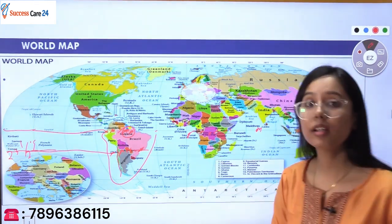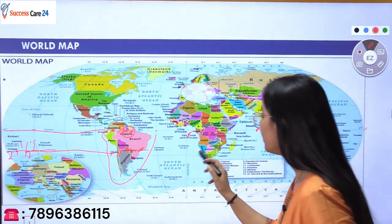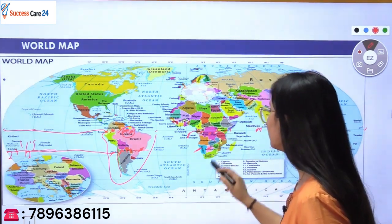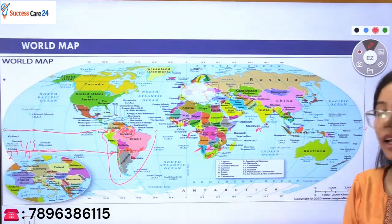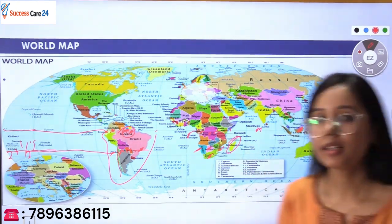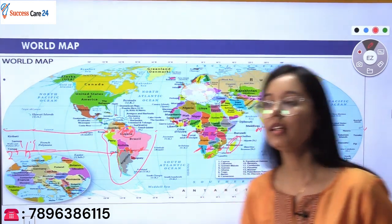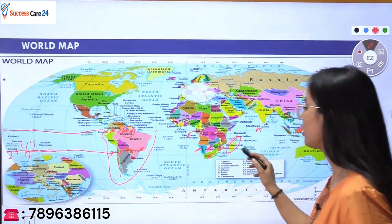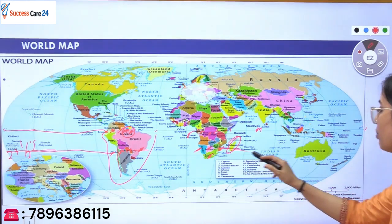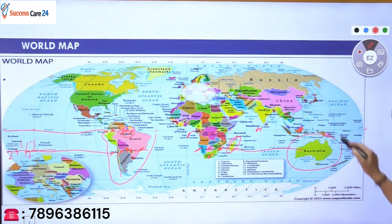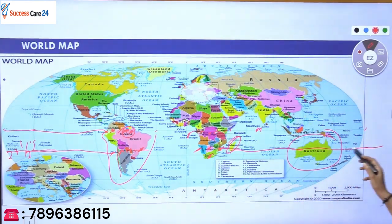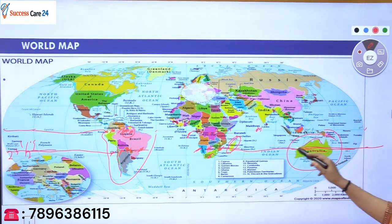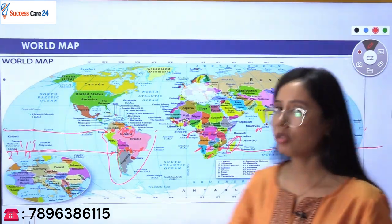Now looking at the African continent, the Tropic of Capricorn passes through Namibia, then Botswana, then South Africa, then Mozambique, and then Madagascar island — which is the island near the African continent. Then coming further, the Tropic of Capricorn also passes through the Australian continent. Australia is the continent through which only the Tropic of Capricorn passes.